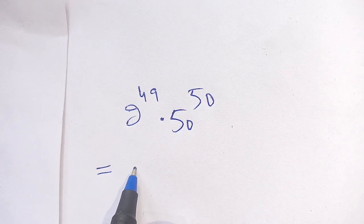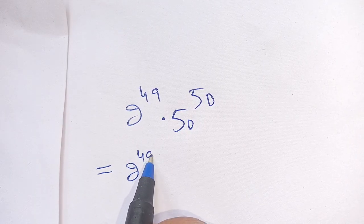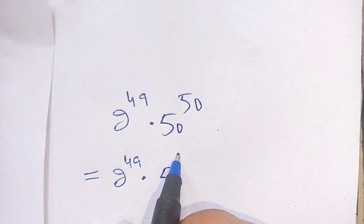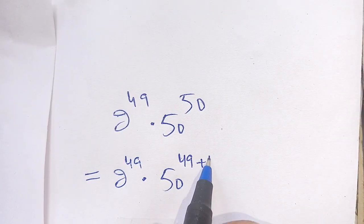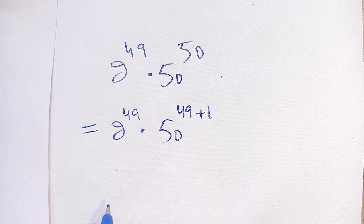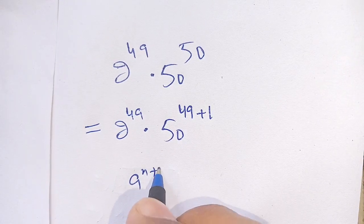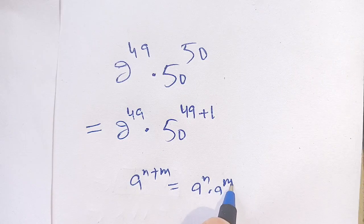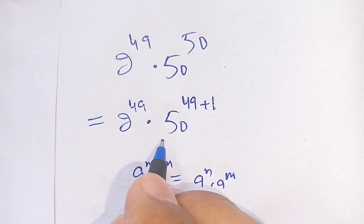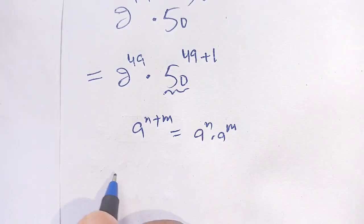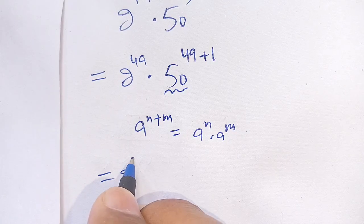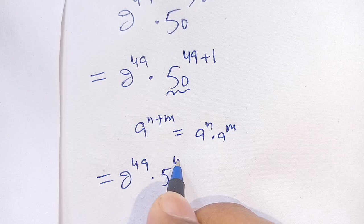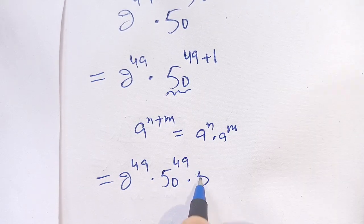We can write this as 2 raise to power 49 times 50 raise to power 50, where 50 can be broken down as 49 plus 1. Now we know that a power n plus m is equal to a power n times a power m. Using this identity on the second term, we get 2 raise to power 49 times 50 raise to power 49 times 50.